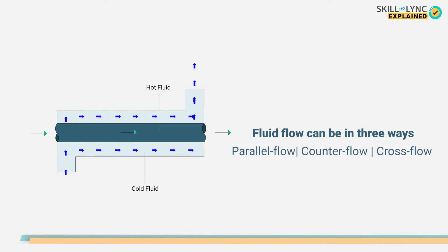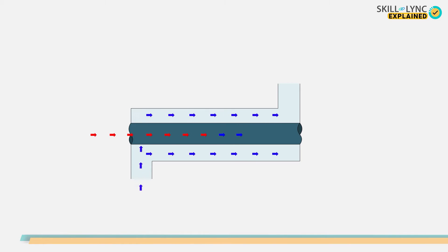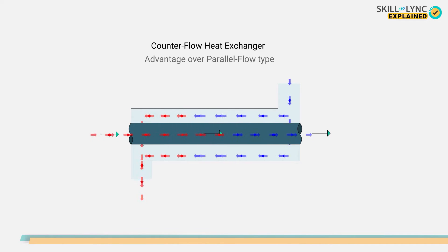Furthermore, the fluid direction can be different in three ways, thus giving rise to three primary classifications of a heat exchanger. A parallel flow heat exchanger has fluids entering from one end, traveling parallel in the same direction, and then exiting from the other end. The other type is a counter flow heat exchanger. In this type, two fluids enter from opposite ends, flow in opposite directions, and finally exit from opposite ends.